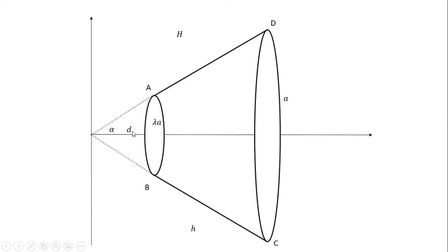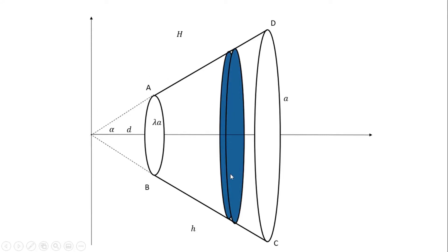Next, we will put our formula in. We will do this part by delta x. This is the same as pi r into delta x. So pi r into delta x into rho.